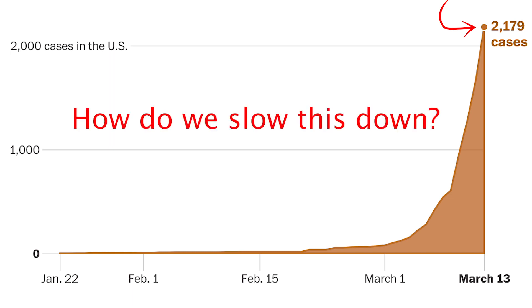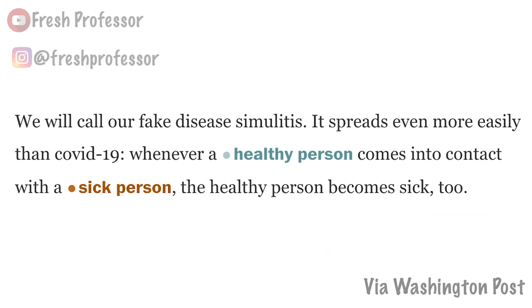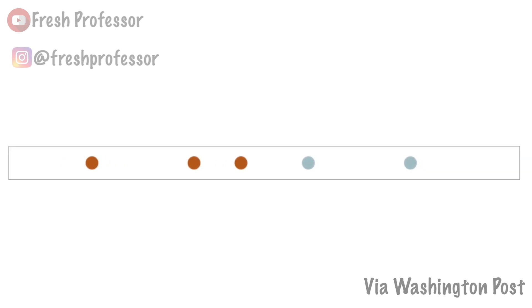So the question is, how do we slow this down? In this article, they simulate a fake disease called simulitis to show the effects of different methods. Each blue dot that you see is going to be a healthy person, and each orange dot is a sick or infected person. What you can obviously see is that sick people infect healthy people when coming into contact with them — that should be intuitive.